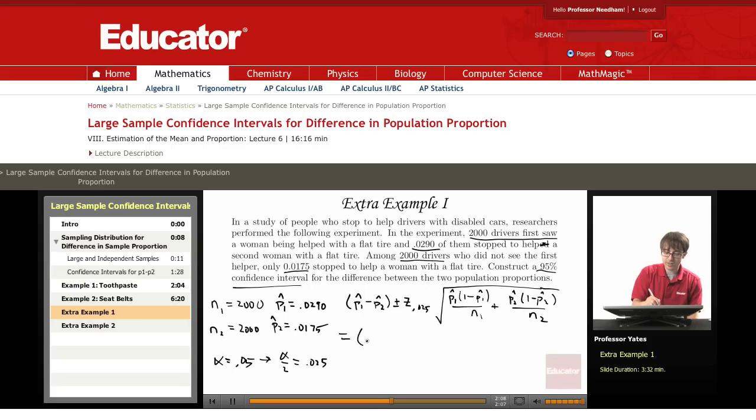Substituting everything in, we have 0.0290 minus 0.0175. When I'm working with the 95% confidence interval, z is 1.96 and then we have the square roots of 0.0290 times 0.9710 divided by 2,000 inside the square root.